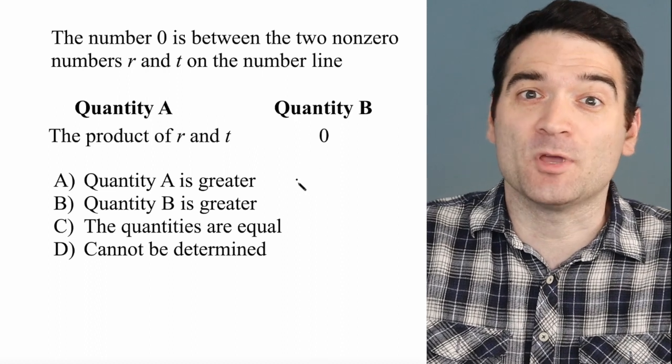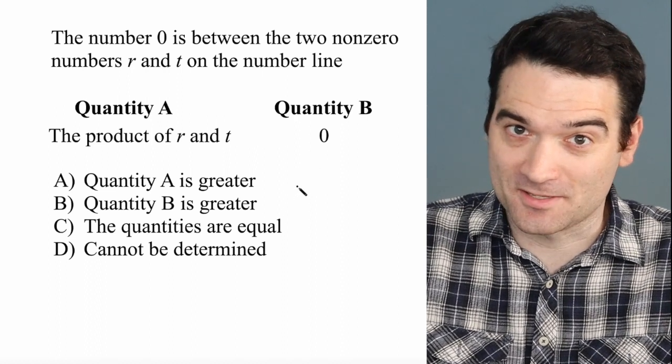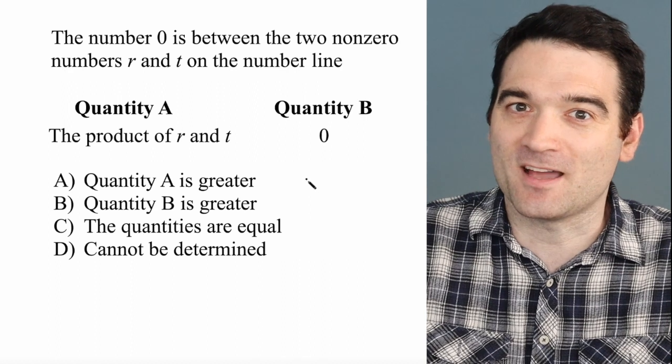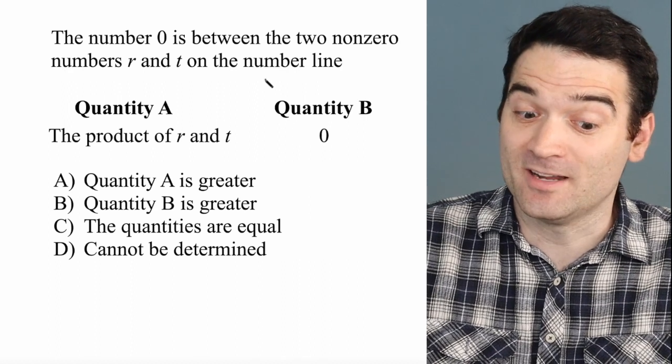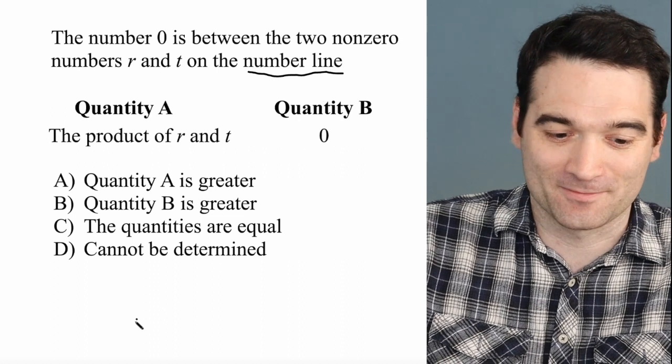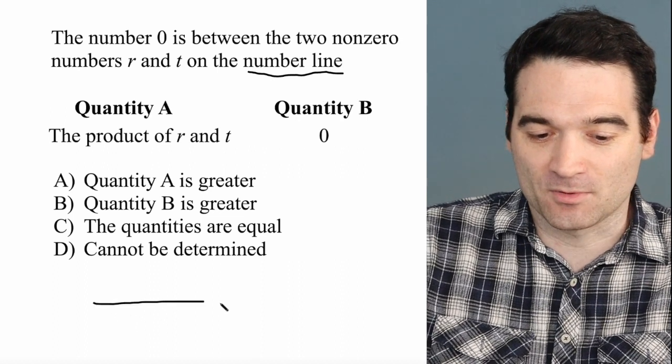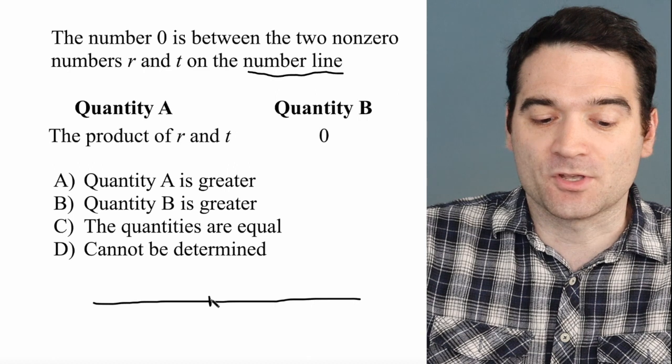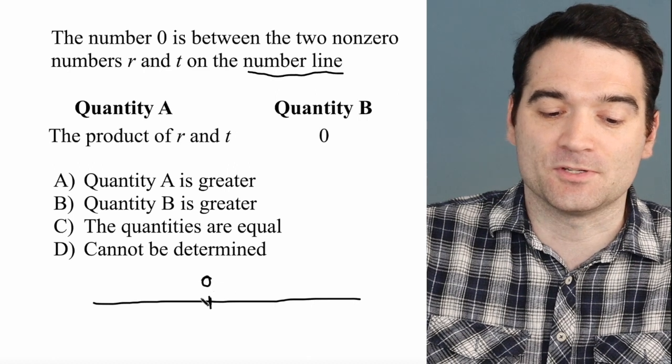I am a huge fan of number lines. Whenever I get the opportunity, I'll draw one out. And here, it explicitly talks about a number line, so I better draw one. I'm going to draw my number line, and 0 is always a good number to put on it. So 0 is right there.